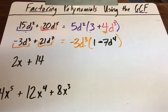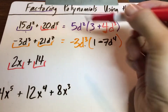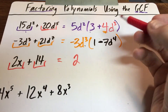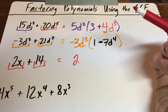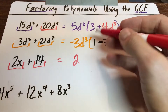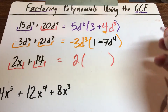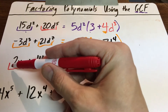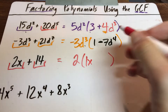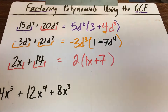The next one is probably the easiest. You've got two terms, and there's no variable on the second one. Both numbers can be divided by two, and they have no X's in common because the second term has no X's at all. So two is the only thing they have in common. Two divided by two leaves just one X, and 14 divided by two is seven.